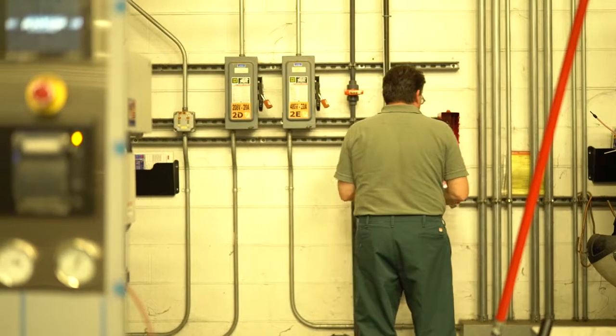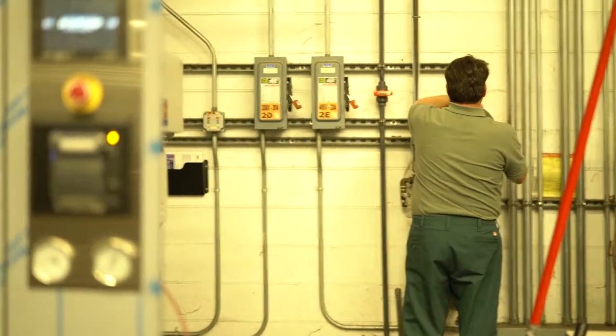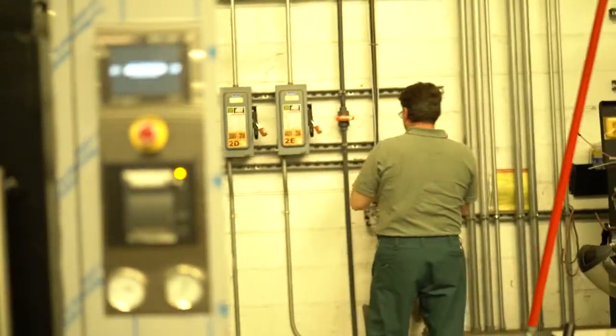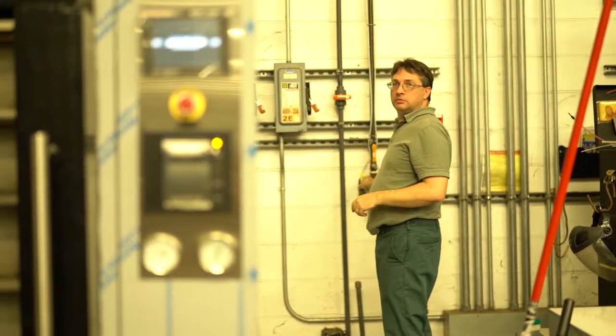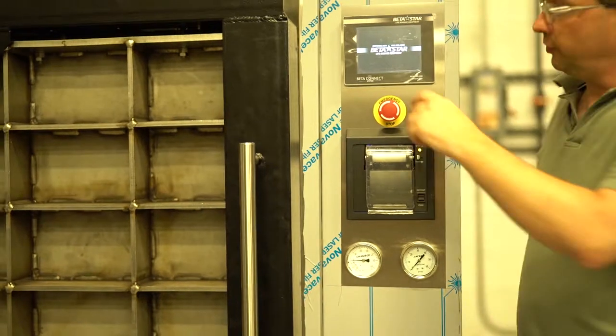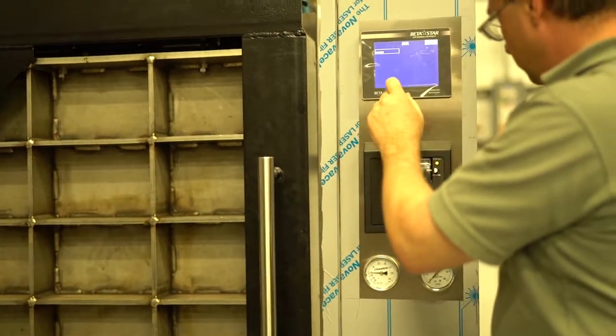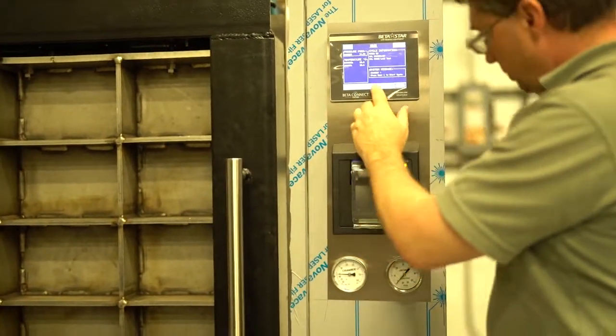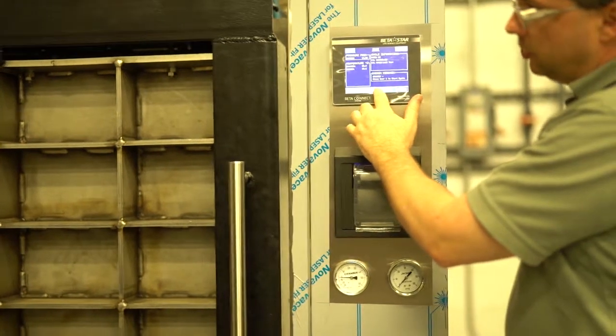Before a single sterilizer leaves Betastar headquarters, each unit must pass a factory acceptance test to ensure all utilities and components function correctly. This test includes running a cycle to completion, verification of door function, alarms testing, and cycle printout data.